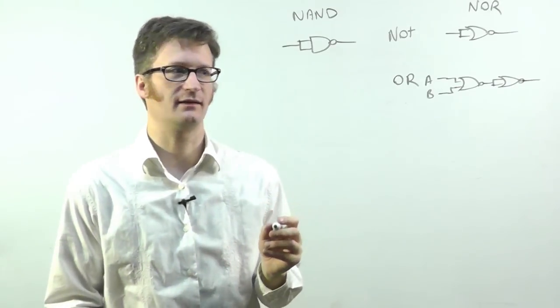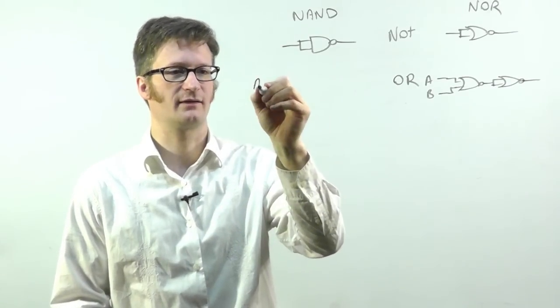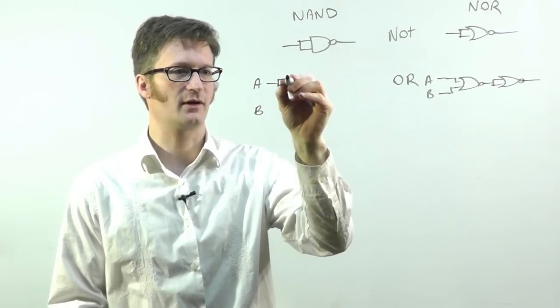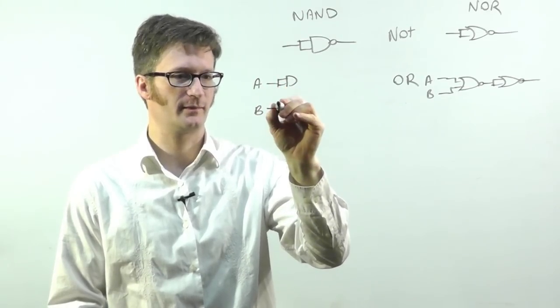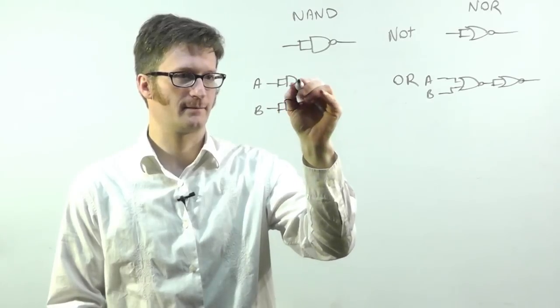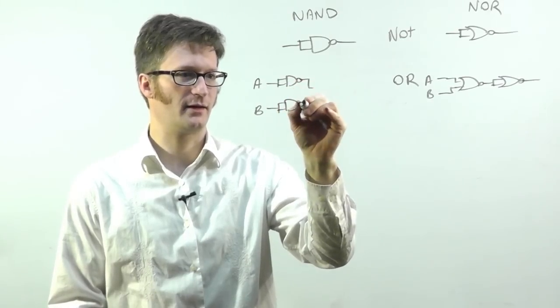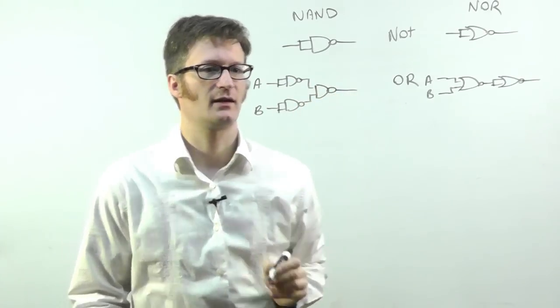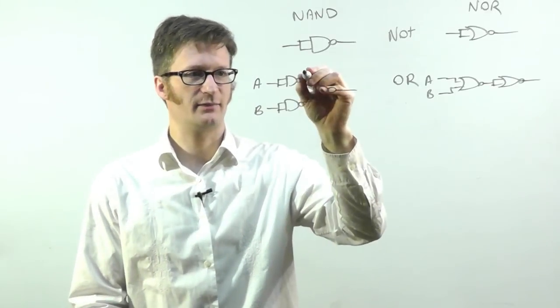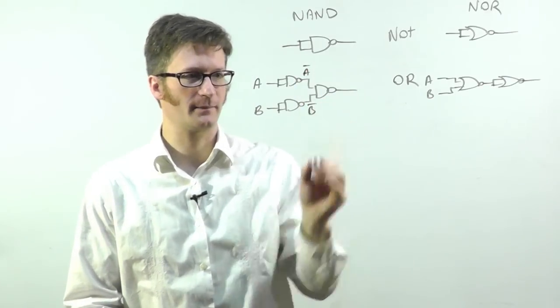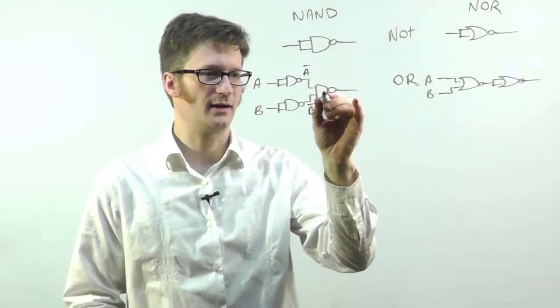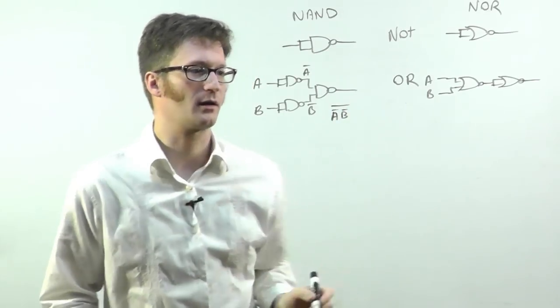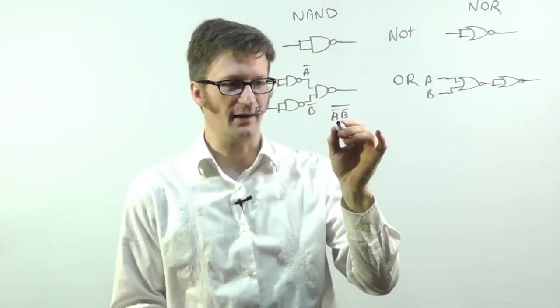Now with NAND, an OR is a little bit more complex. I start out with an inverter on both inputs. Then I run them into another NAND gate like that. So at this point I have A bar, and here I have B bar. And right here I have A bar, B bar, bar. Well that doesn't look like an OR yet.